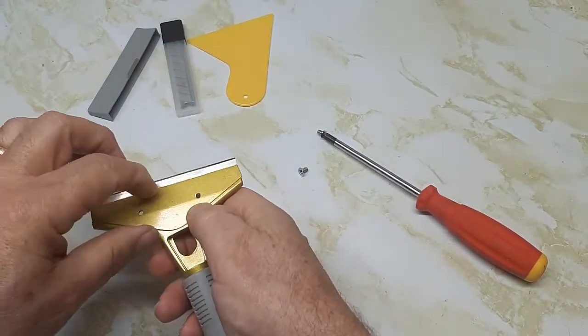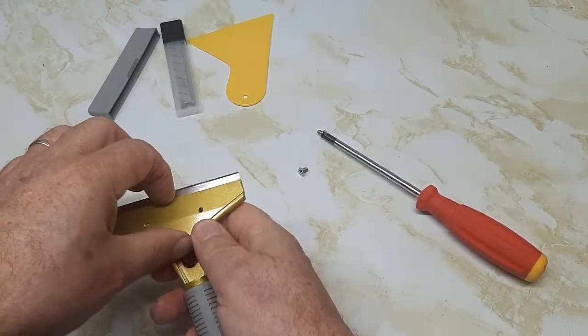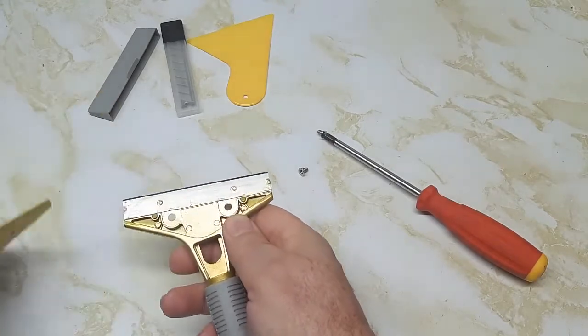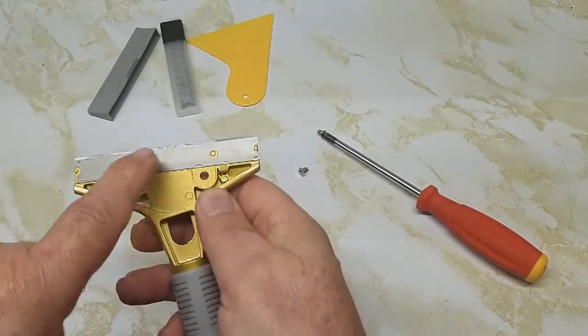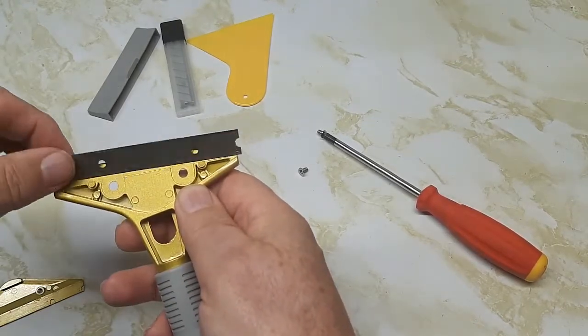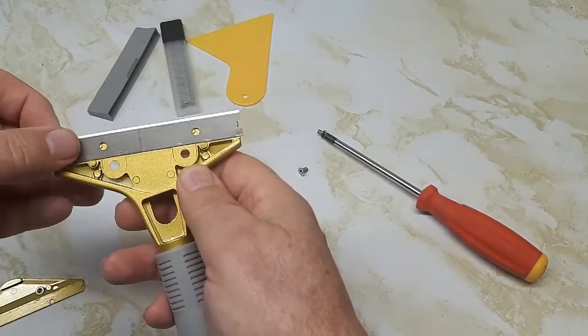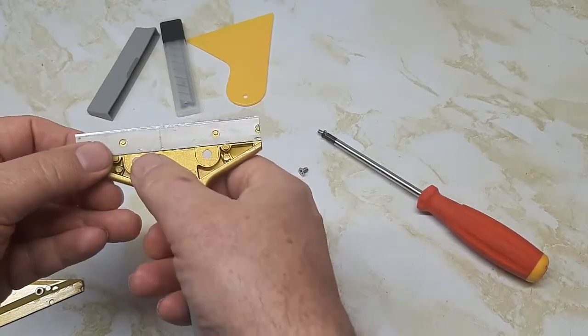Now we flip it over and see inside here where the blade is. That's how it's held in. You see the two notches here? That's where the blade is held into these two notches.